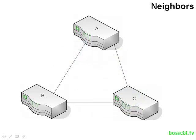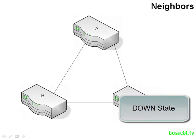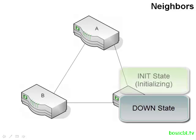As the hello process continues, routers move into different states of becoming neighbors. Each state signifies a different level of progress in becoming neighbors. If two routers used to be neighbors and for some reason stopped — perhaps a link between them went down or there was a configuration change — the neighbor state is called down. So they used to be neighbors, but they just can't communicate now.